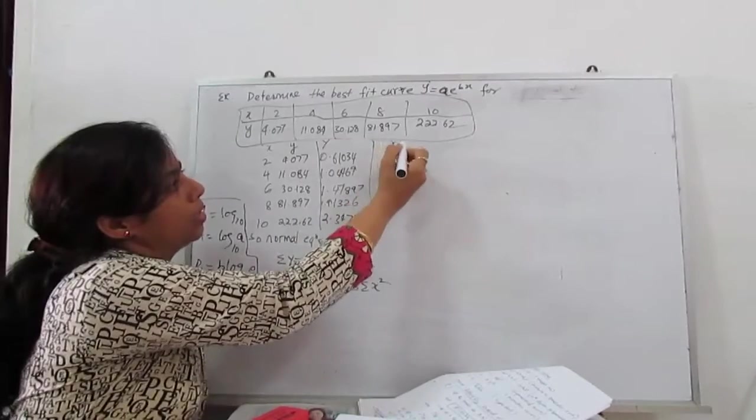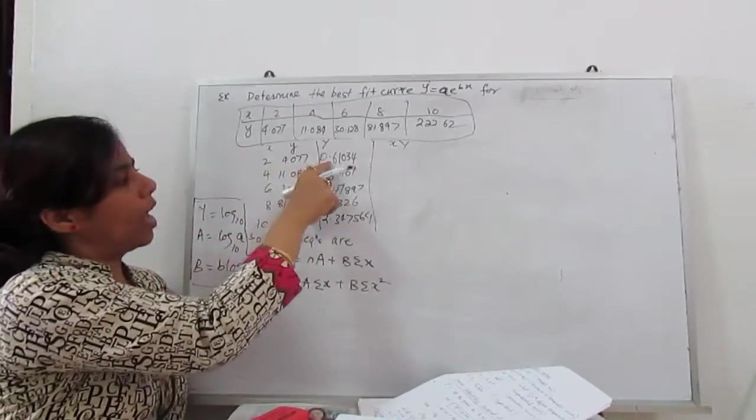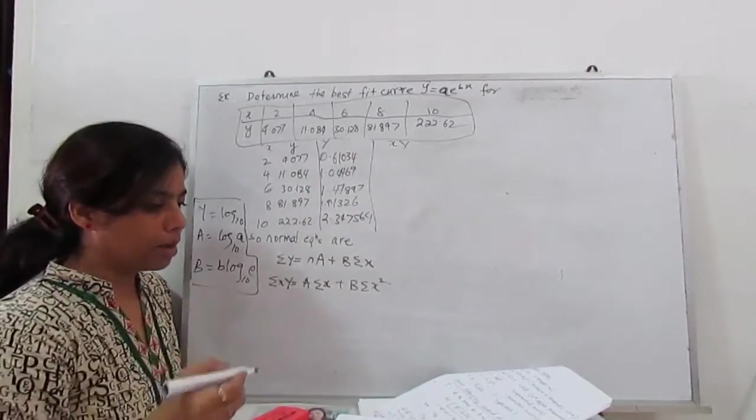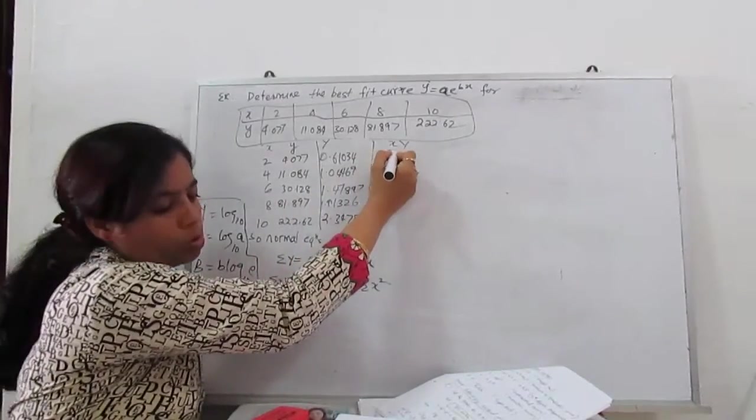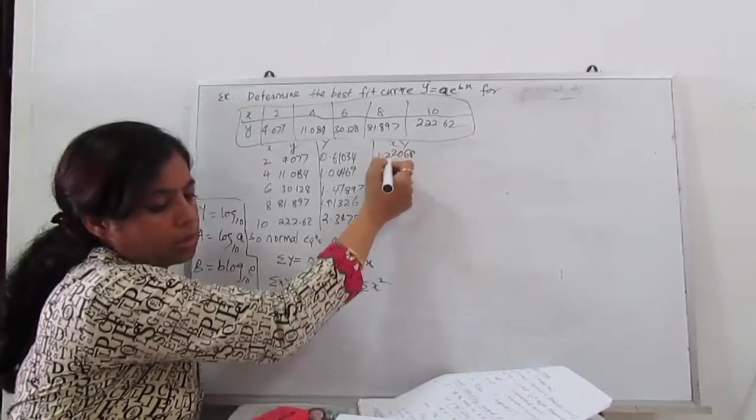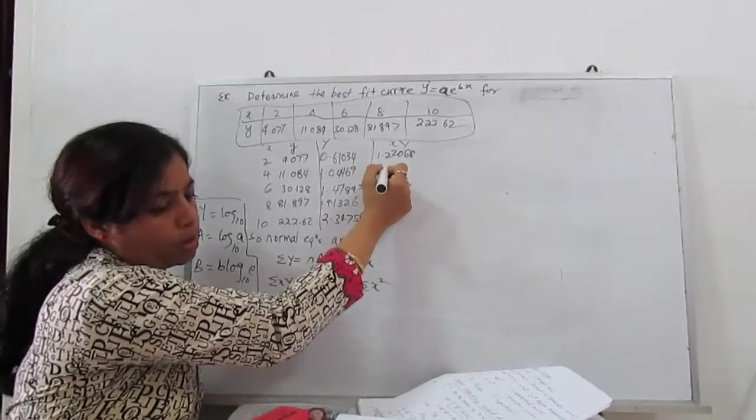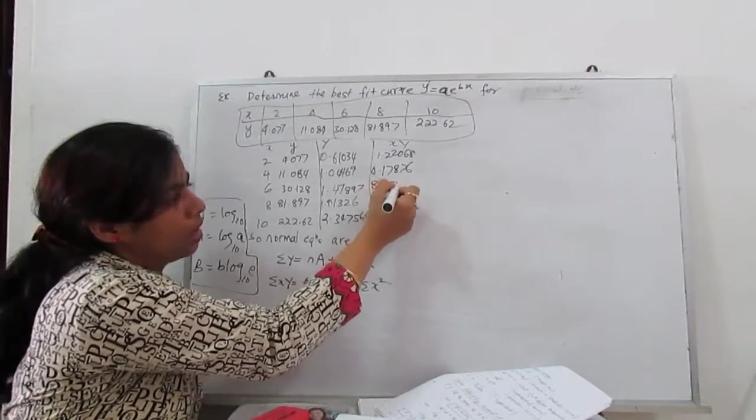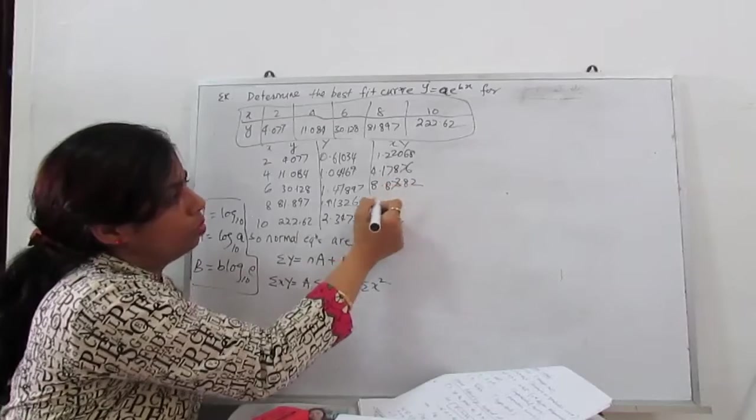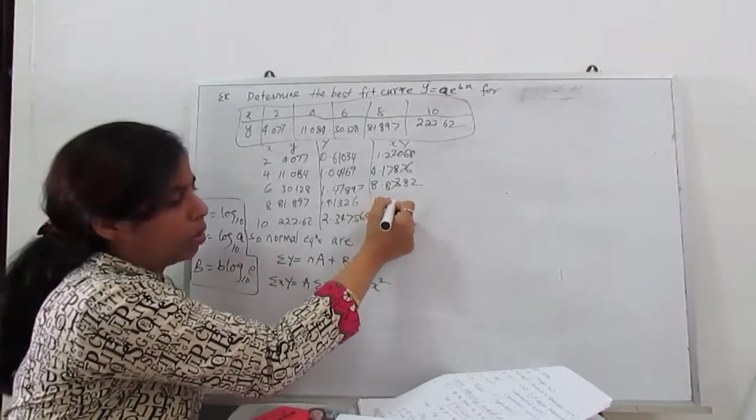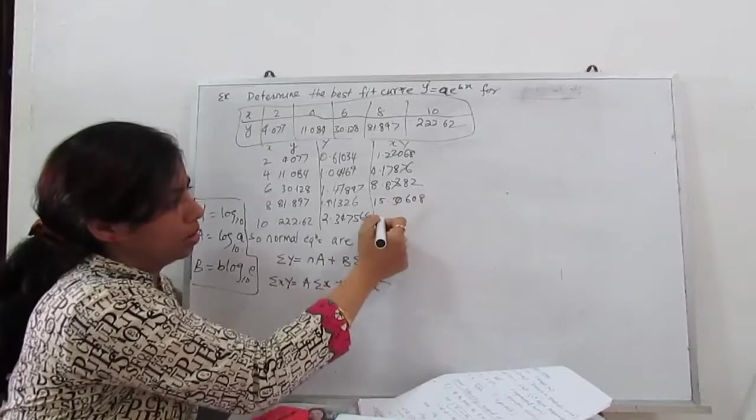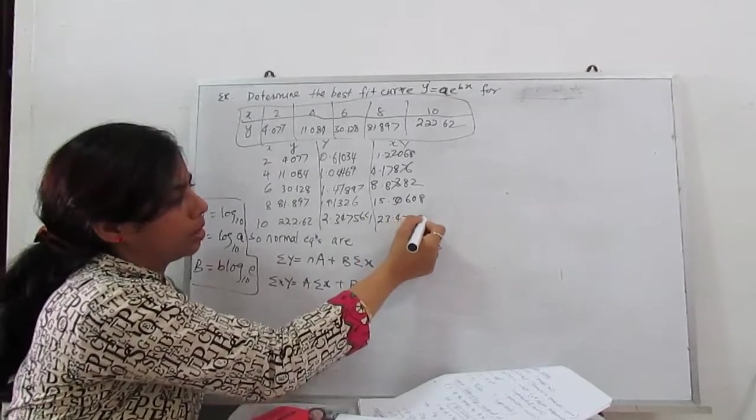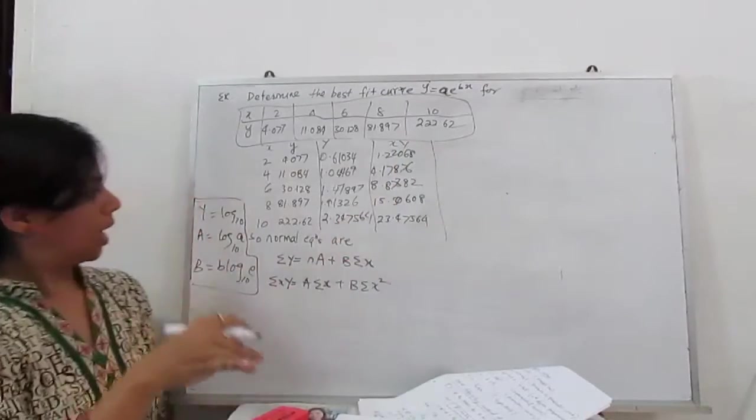Next is x into capital Y. So 2 times this, 4 times this, 6 times this, 8 times this. So this will become 1.22068, 4.17876, 8.87382, 15.30608 and 23.47564.